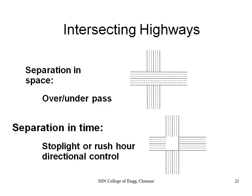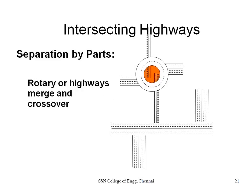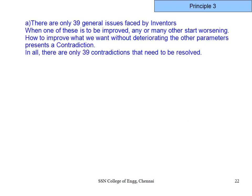Traffic signals are separation in time — for some minutes one direction stops, for another interval the other direction goes. He applies these same separation principles to technical problems. For example, a multilevel grade separator represents separation by parts: traffic flows in a similar direction and then diverts into different directions.